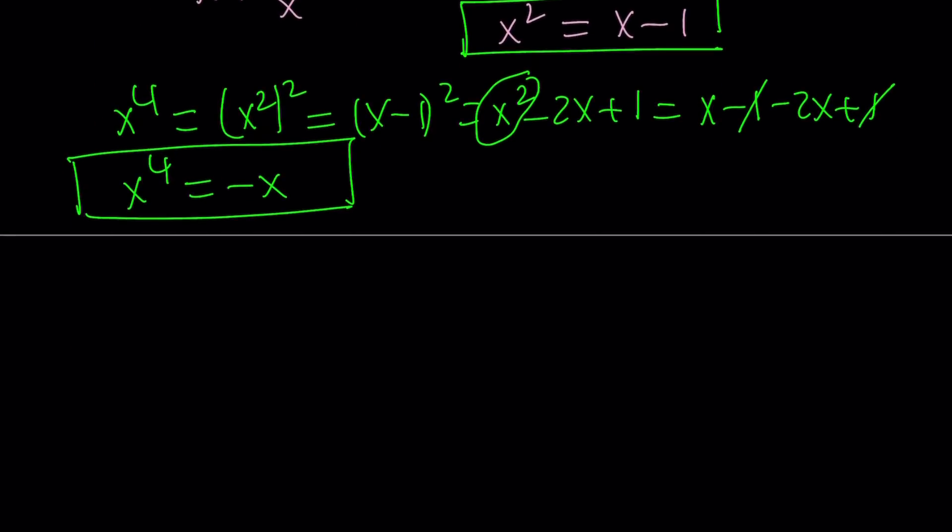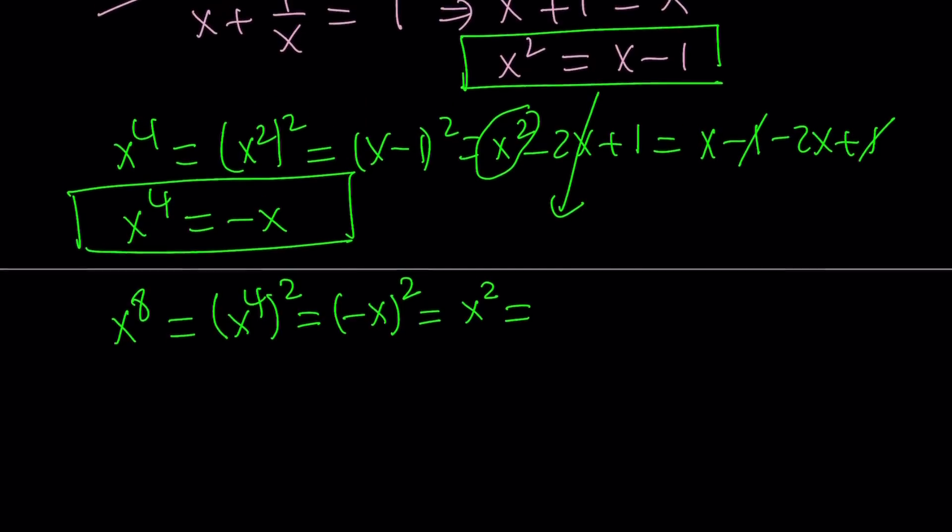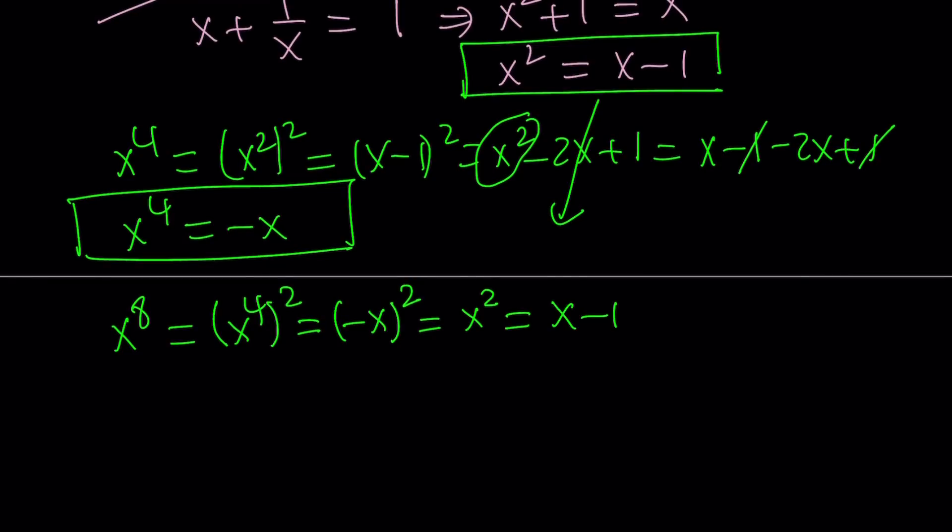This means x to the 4th can be written as negative x when x squared is x minus 1. Awesome. Let's continue this process to find out x to the 8th. So for that, I will square x to the 4th power, but x to the 4th can be written as negative x. When I square negative x, it becomes x squared, and x squared can be replaced with x minus 1. So x to the 8th, in other words, can be written as x minus 1.